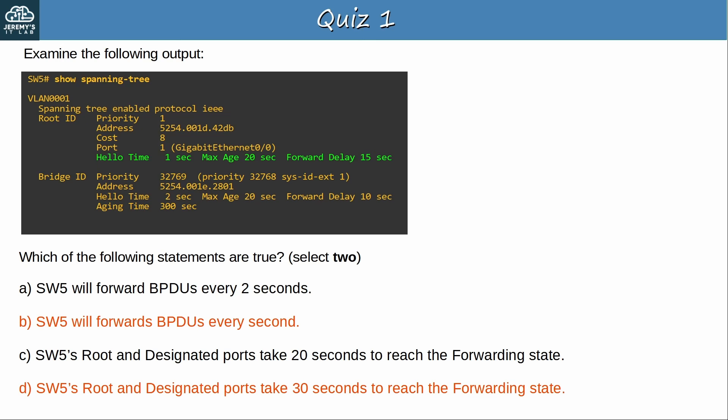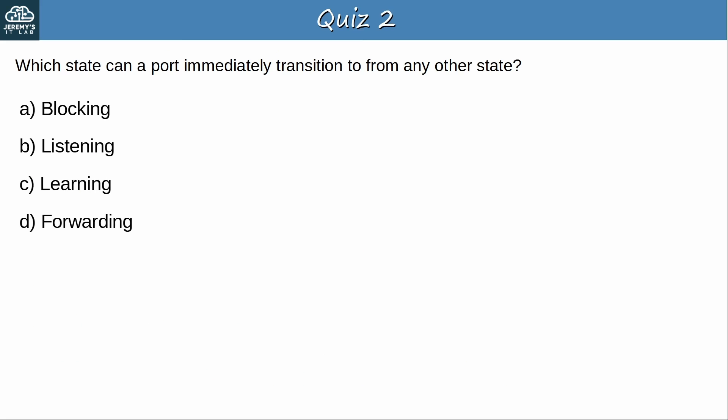Okay, let's go to question 2. Which state can a port immediately transition to, from any other state? Pause the video now to think about the answer. Okay, the answer is A, blocking. As this diagram shows, a port can immediately transition to the blocking state from listening, learning, or forwarding. Although STP is cautious about transitioning a port to the forwarding state to avoid causing Layer 2 loops, transitioning a port to the blocking state poses no risk of causing Layer 2 loops, so there is no need to transition through the listening and learning states.